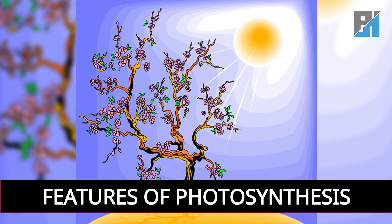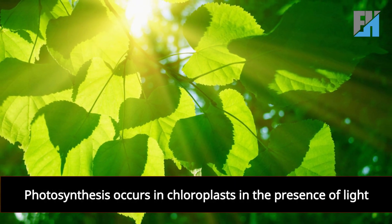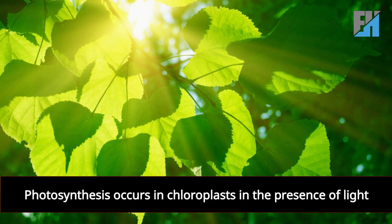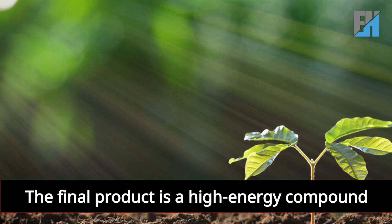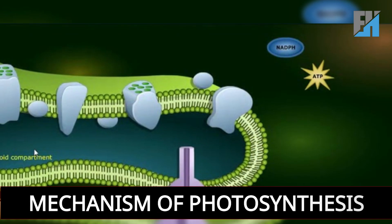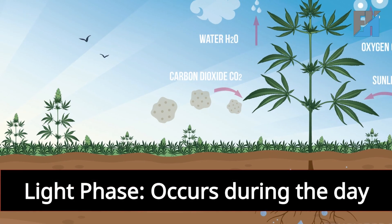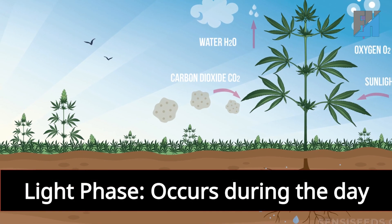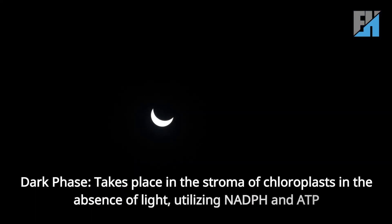Features of photosynthesis: photosynthesis occurs in chloroplasts in the presence of light, and the final product is a high-energy compound. Mechanism of photosynthesis: the light phase occurs during the day, while the dark phase takes place in the stroma of chloroplasts in the absence of light, utilizing NADPH and ATP.